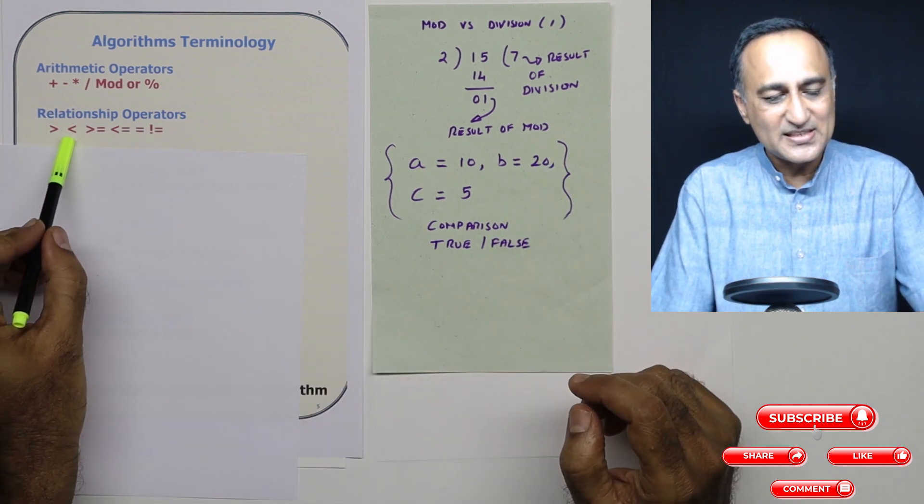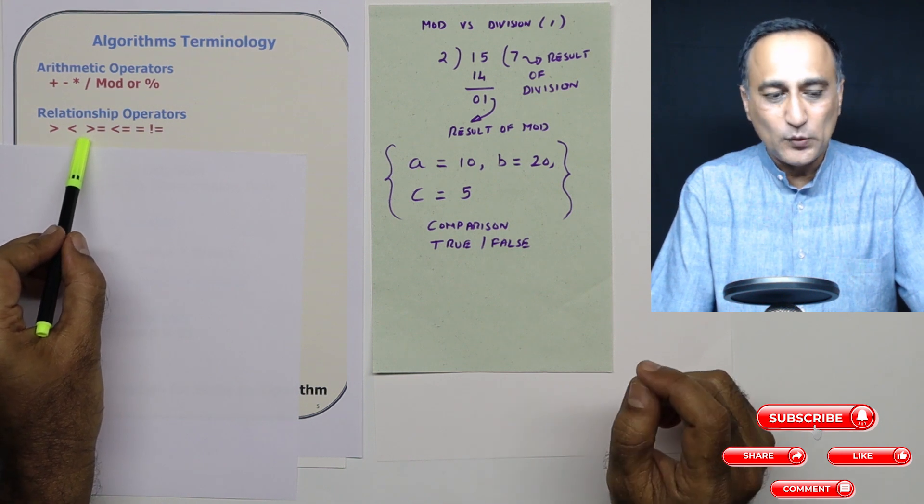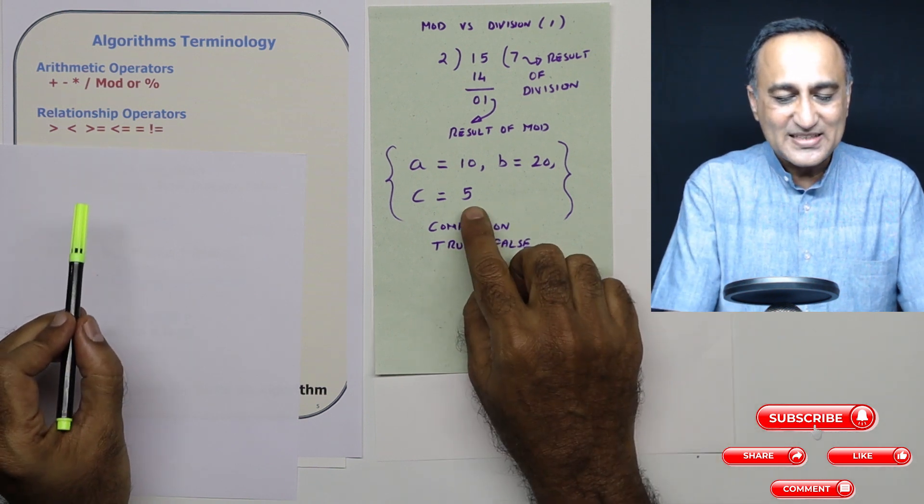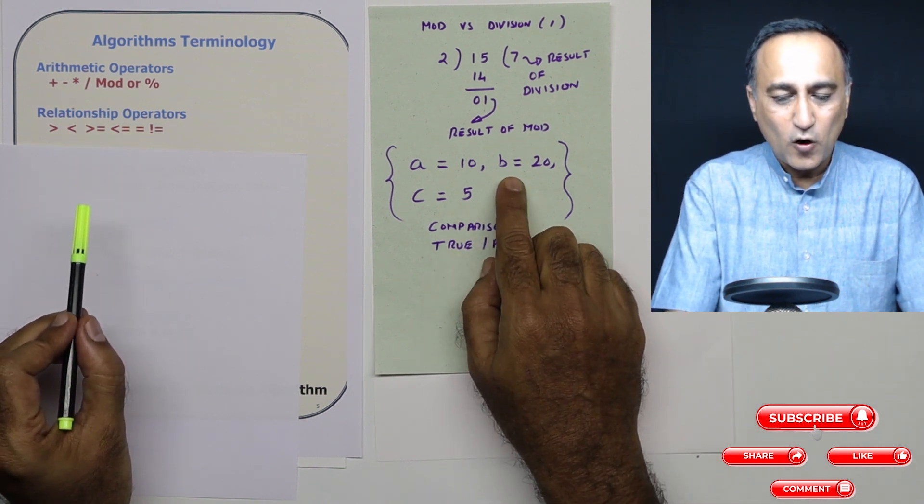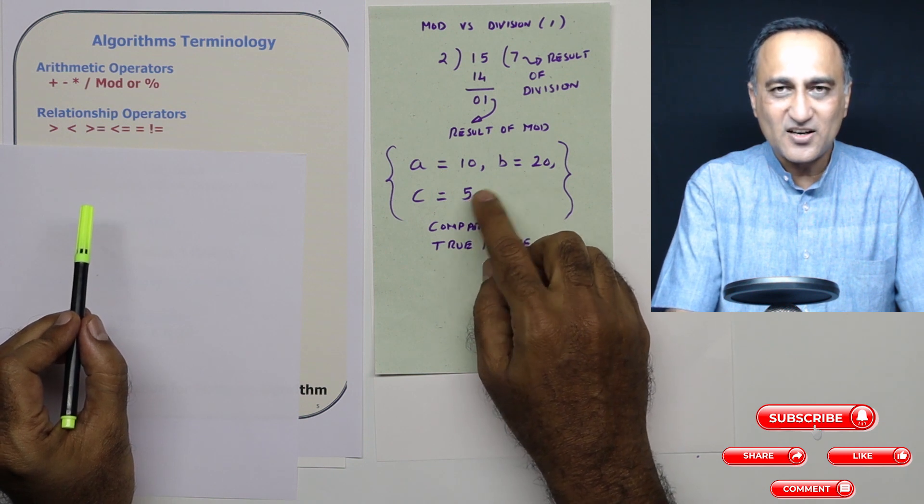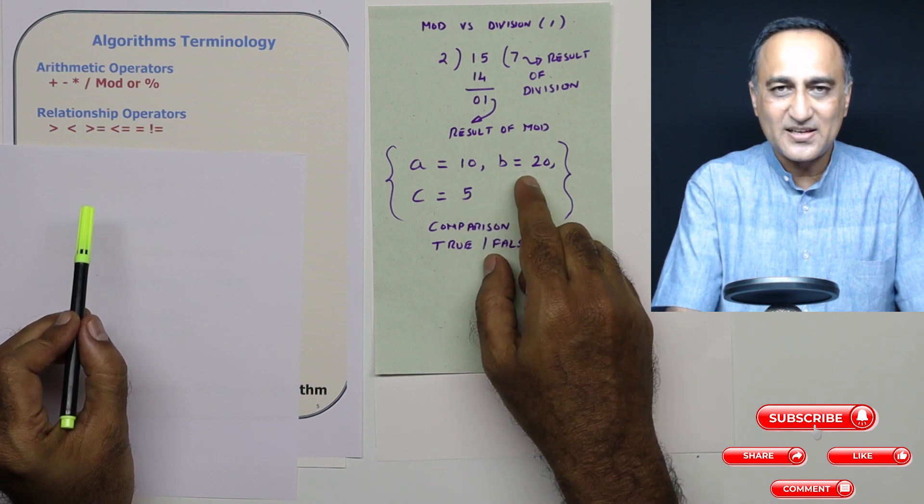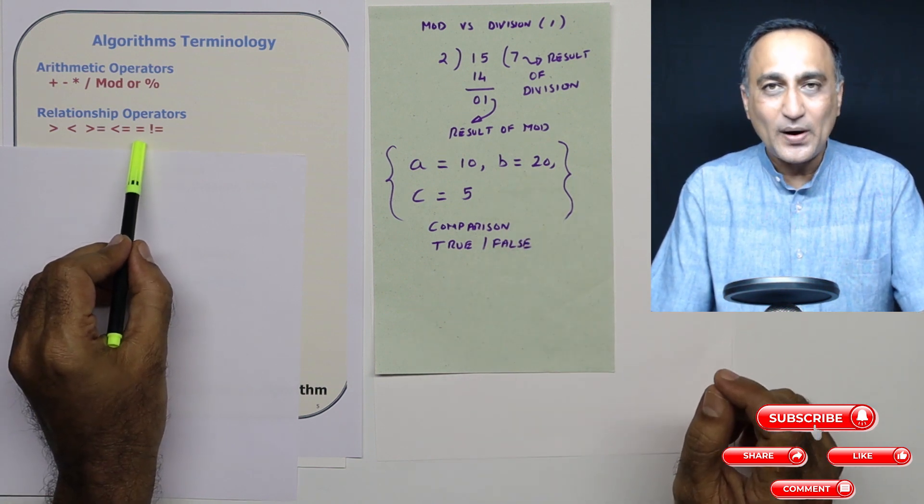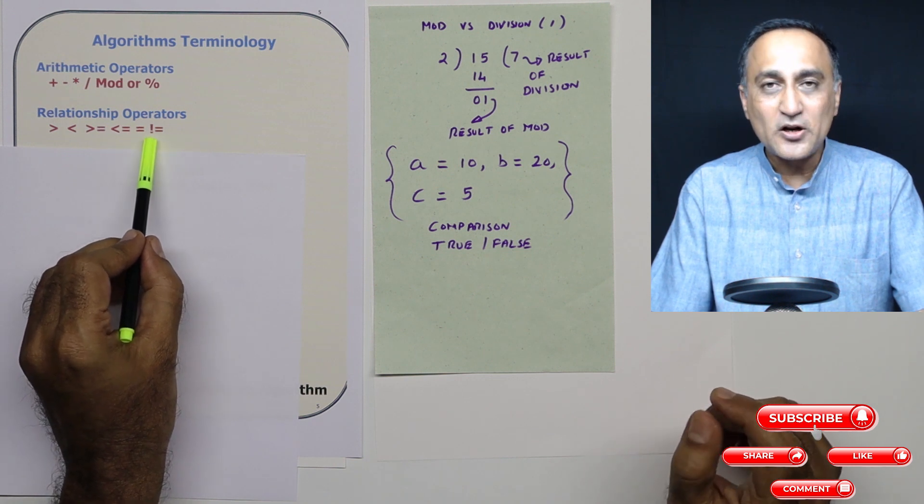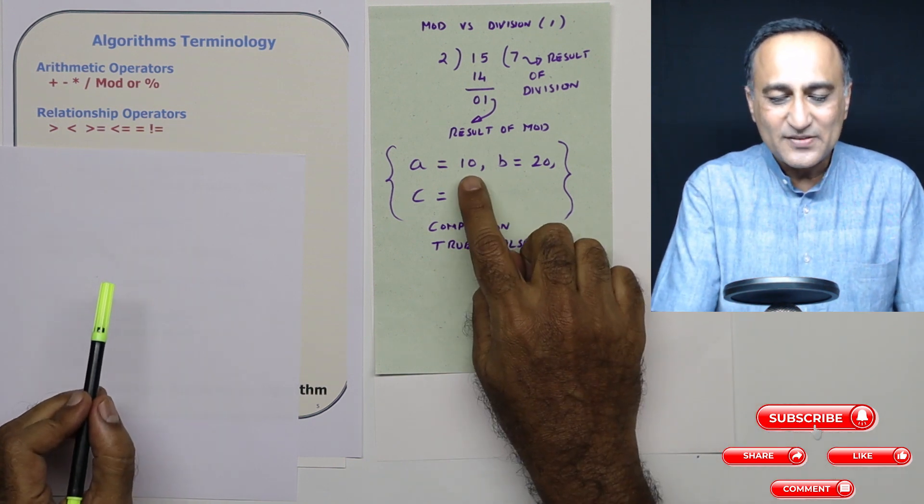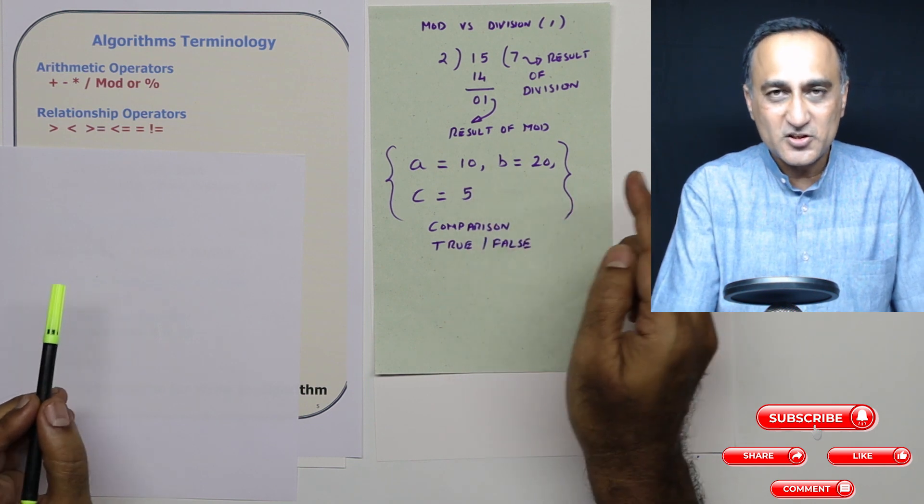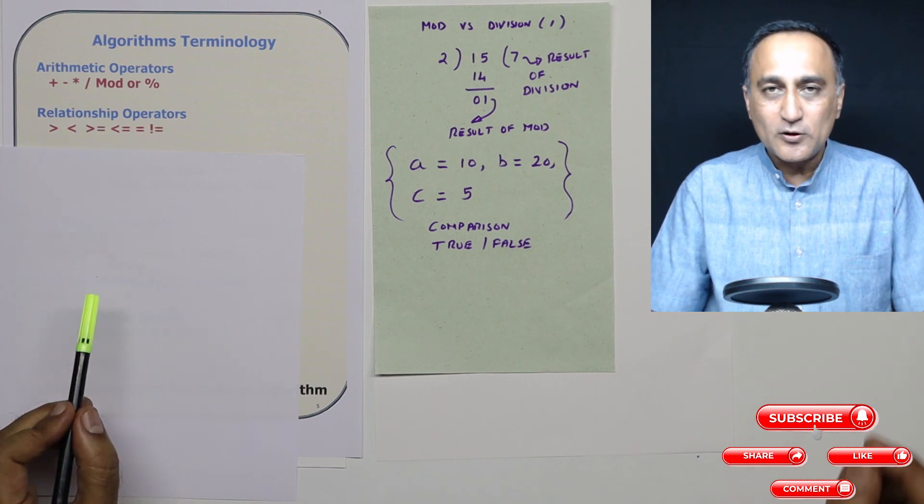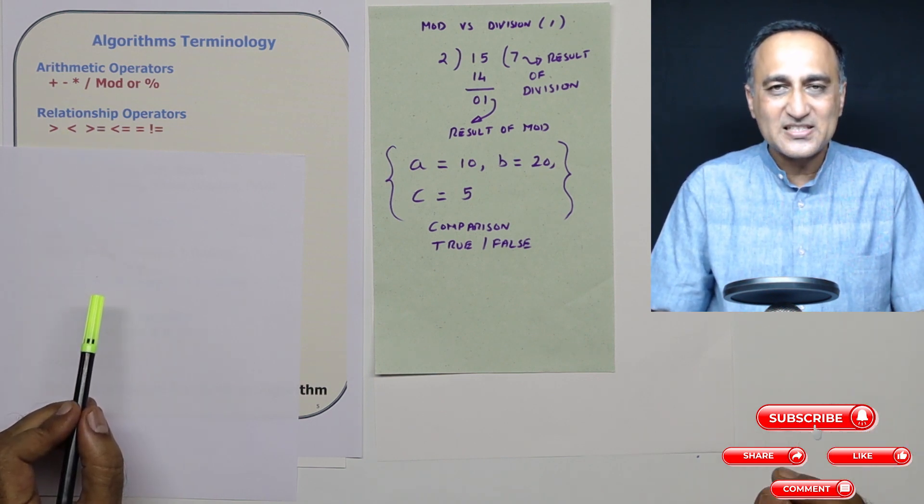This stands for greater than, this is less than, this is greater than or equal to, this is less than or equal to. For example, c is less than or equal to b. That means it's either less than or equal to. Since 5 is less than 20, we are fine. This single symbol stands for equality. This stands for not equal to. For example, if I check a is not equal to b, it is true because 10 is not equal to 20.